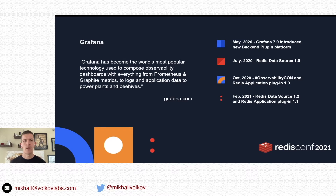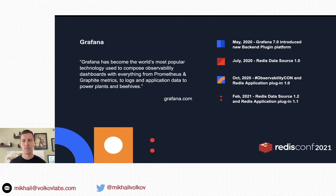Grafana is the world's most popular observability tool. In May 2020, Grafana Labs released version 7, introducing a new backend plugin platform. We started working on Redis data source and in July 2020 released version 1, which was officially registered in Grafana repository. We continued working on Redis data source, adding new panels and commands, and released the Redis Application Plugin at ObservabilityCon in October 2020.